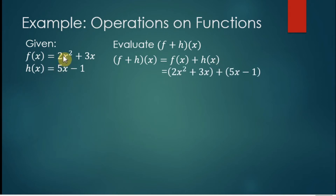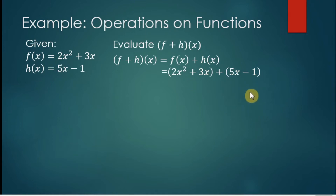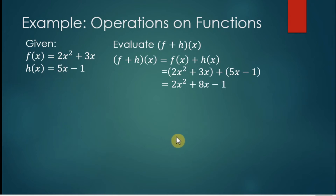By definition, we're going to add f of x and h of x. So we simply take the entire f of x — that's 2x squared plus 3x — plus the second function h of x. Then we simplify by combining like terms: we can combine 3x and 5x, that gives 8x, and then we copy the rest.